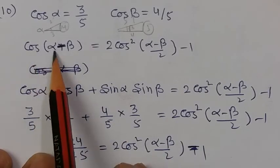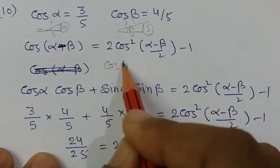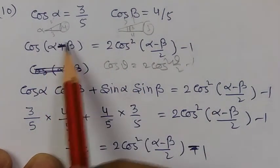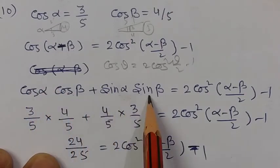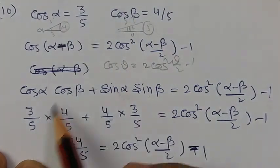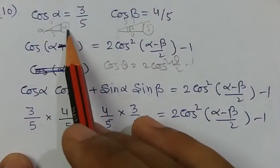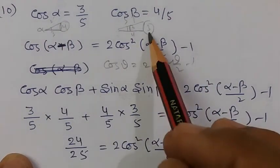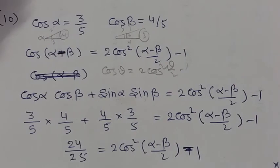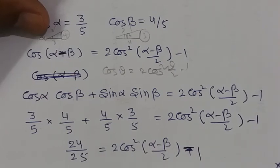So the relation is: cos(α − β) = 2cos²((α − β)/2) − 1. Applying the formula cos(α − β) = cos α cos β + sin α sin β: cos α = 3/5, cos β = 4/5, sin α = 4/5, sin β = 3/5. Solve this and you will get the result. The calculation gives 49/25. Divide by 2 and you will get the final result for cos((α − β)/2).